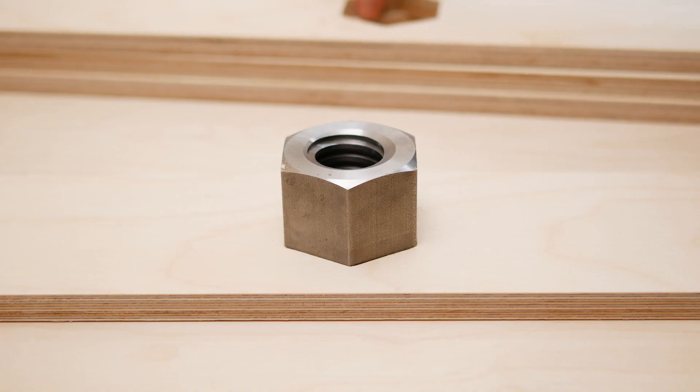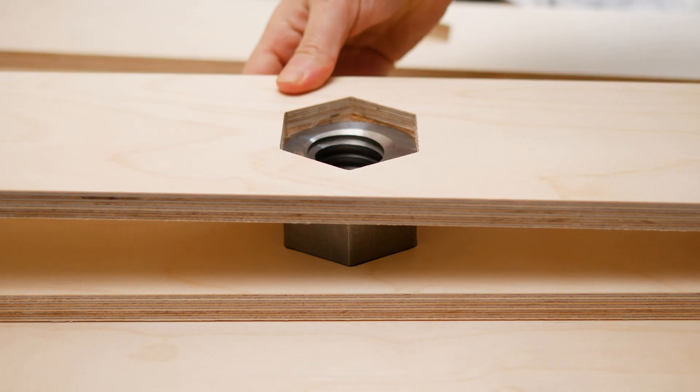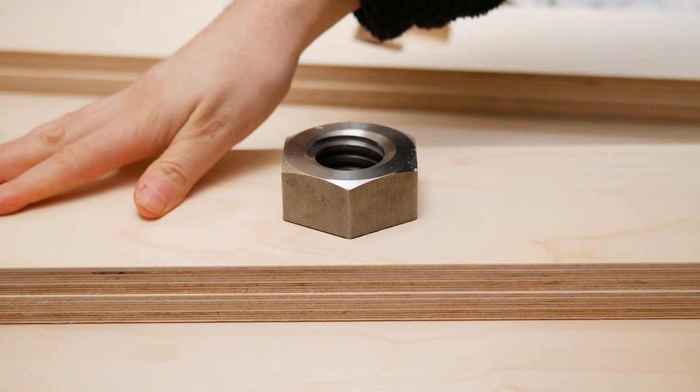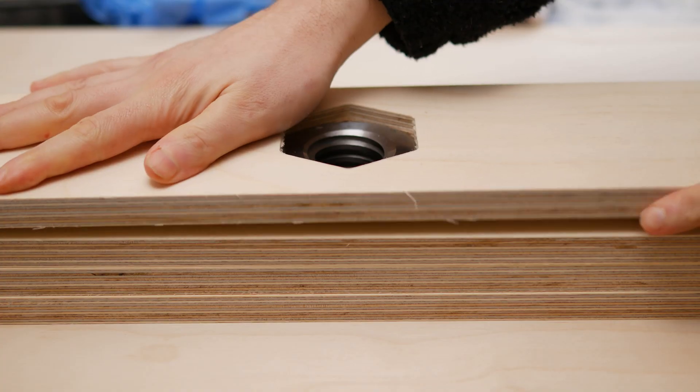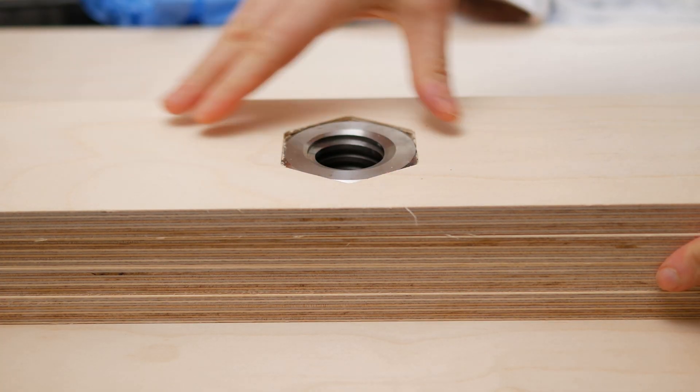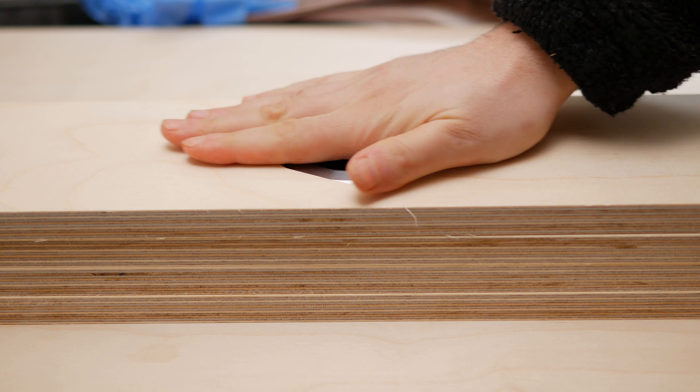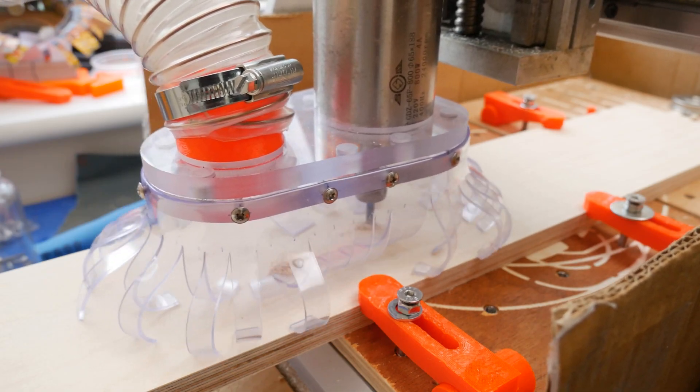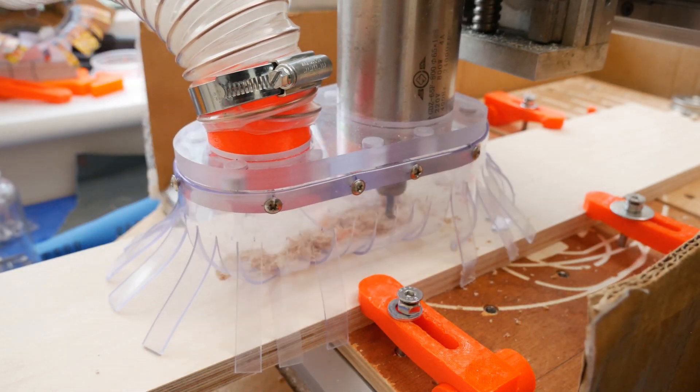You can see here all of the cuts from the lead screw nut and essentially each plank of plywood will be stacked on top of each other and then I'll have one on the top and the bottom which will stop the lead screw nut from coming out.